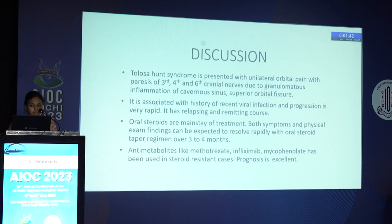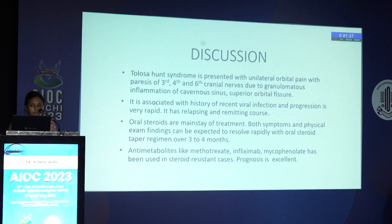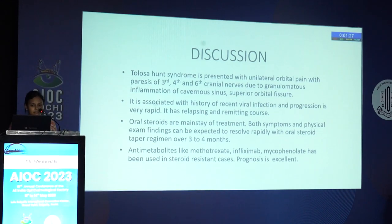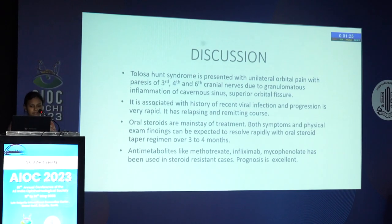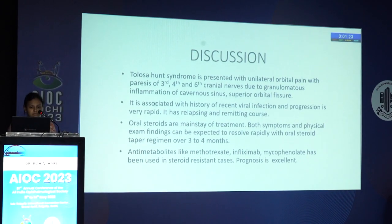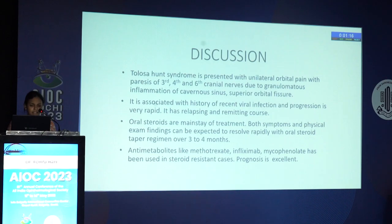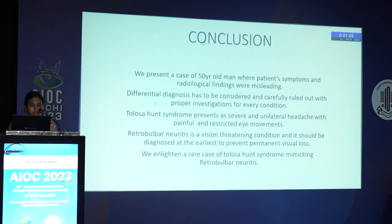Tolosa-Hunt Syndrome presents with unilateral orbital pain with palsies of the third, fourth, and sixth cranial nerves due to granulomatous inflammation of the cavernous sinus and superior orbital fissure. It is associated with a history of recent viral infection and progression is very rapid with a relapsing and remitting course. Oral steroids are the mainstay of treatment. Both symptoms and physical exam findings can be expected to resolve rapidly with an oral steroid tapering regimen over three to four months. Anti-metabolites like methotrexate, infliximab, and mycophenolate have been used in steroid-resistant conditions. Prognosis is excellent.